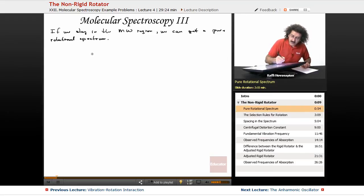It's always good to review the equations. The energy equals h bar squared over 2I times J times J plus 1, where J takes on the values 0, 1, 2, and so forth.